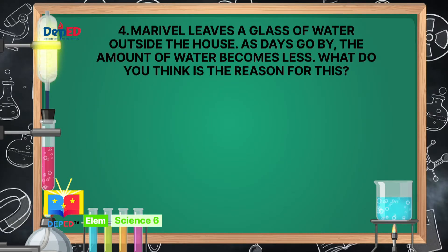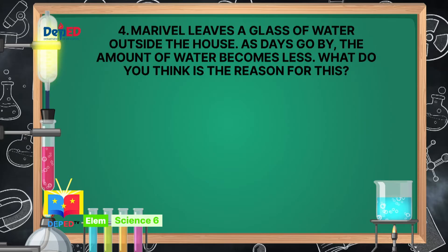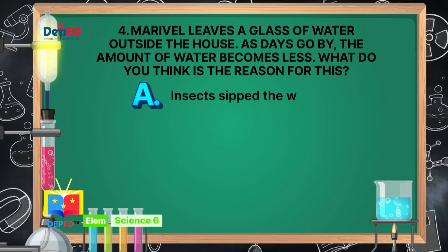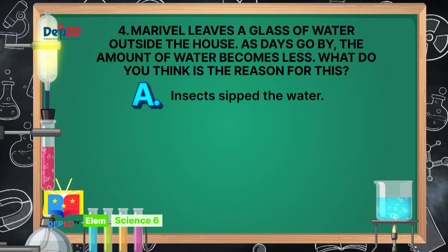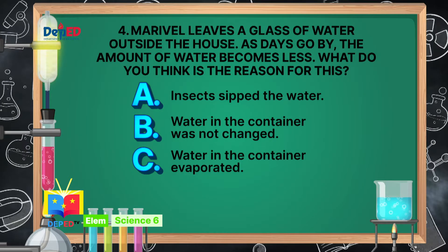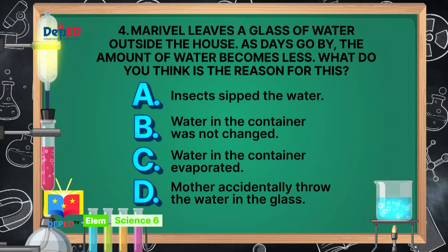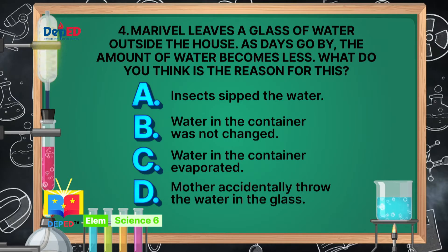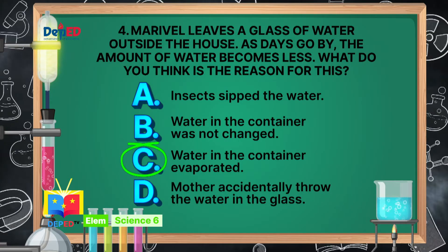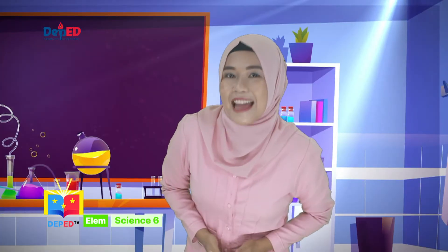Number 4. Marivel leaves a glass of water outside the house. As days go by, the amount of water becomes less. What do you think is the reason for this? A. Insects sipped the water. B. Water in the container was not changed. C. Water in the container evaporated. Or D. Mother accidentally threw the water in the glass. The correct answer is C, water in the container evaporated.